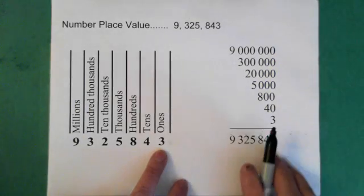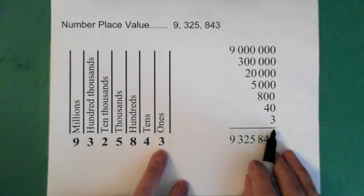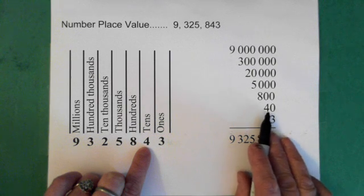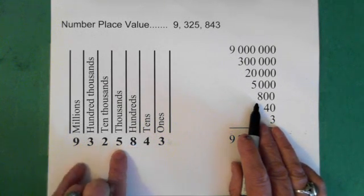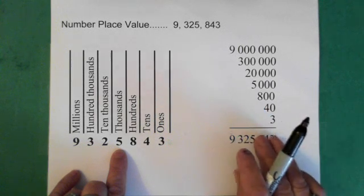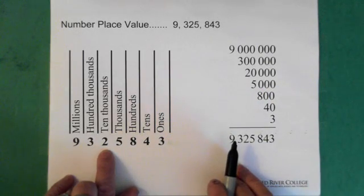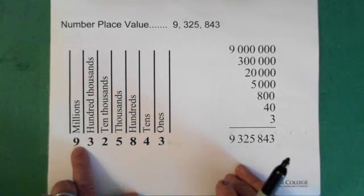Now, the 3 is our ones position. So when we're looking at the place value, the 3 is in the ones position. The 4 is in the tens position. We know this if we were thinking money, this would be 4 ten dollar bills, right? The 8 is in the hundreds position. The 5 is in the thousands position, so we have 5,000. The 2 is in the 10,000 position. The 3 is in the 100,000 position. And the 9 is in the millions position.